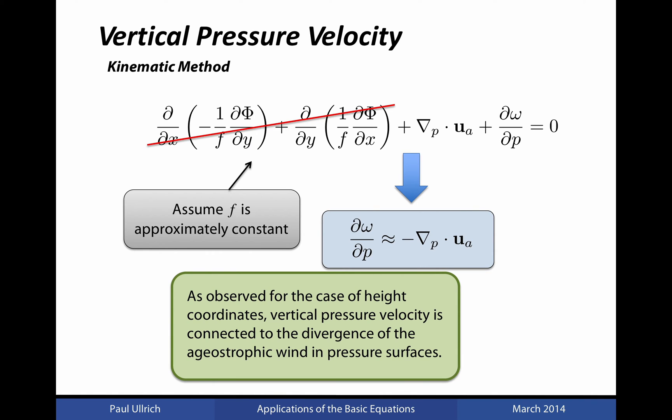So what does this expression say? It says that if the ageostrophic wind is converging — that is, if you have horizontal flow moving towards a central point — that will tend to induce rising motion above that point, because converging air is forced to go either upward or downward. This makes sense for an incompressible flow. For the case of a divergent flow, if ∇_p · u_a is positive, then the right-hand side is negative, corresponding to sinking motion. That is, if you have diverging flow, air is taken away from a central point, and that air must be replaced from above and below.